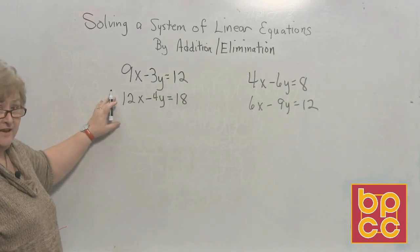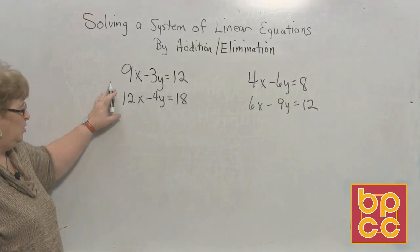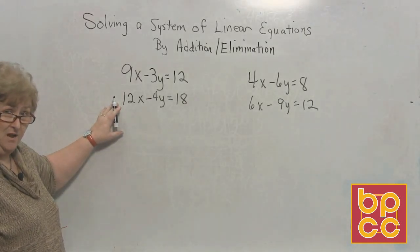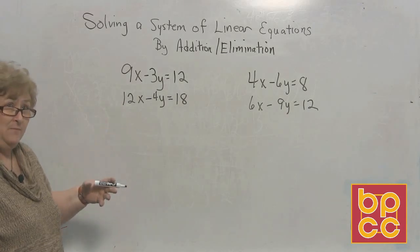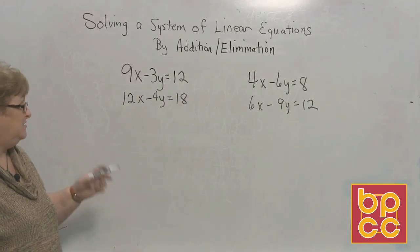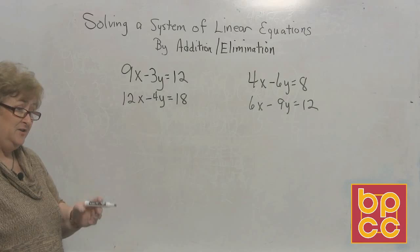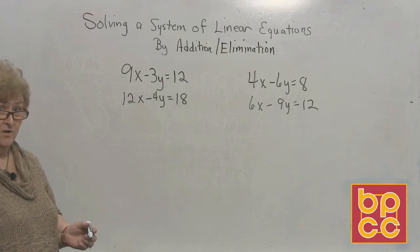If I want to get rid of the x's, we're going to have to decide what 9 and 12 would have in common. Like least common multiple or least common denominator, what would both 9 and 12 go into? It would be 36, wouldn't it?